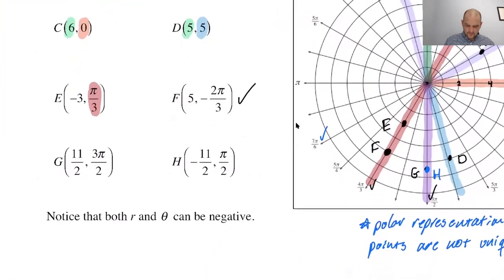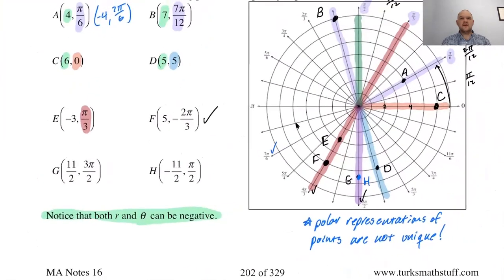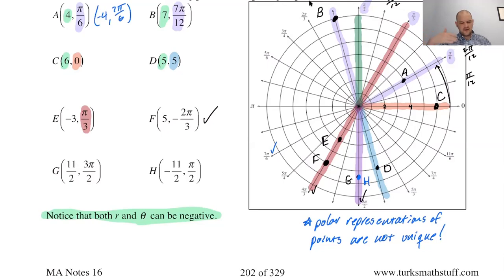Both R and theta can be negative and we need to understand how to interpret those — I'll come back in the next video to discuss that more. But as a general overview: plotting polar points isn't bad at all if you know the unit circle. You always rotate first, then walk. If R is positive, walk forward; if R is negative, face forward but walk backwards.